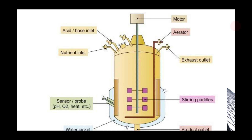Since many exothermic and endothermic reactions occur during fermentation, there will be a lot of temperature variation, and temperature control is essential. Temperature control is achieved by a water jacket around the vessel, which controls temperature variation. This is often supplemented by internal coils to provide sufficient heat transfer surface. So water jackets as well as internal coils work together to maintain the temperature of the fermenter.